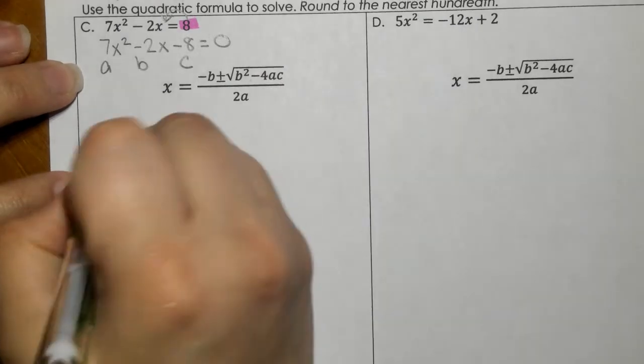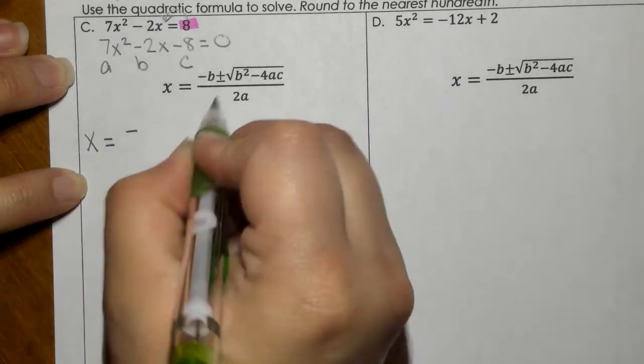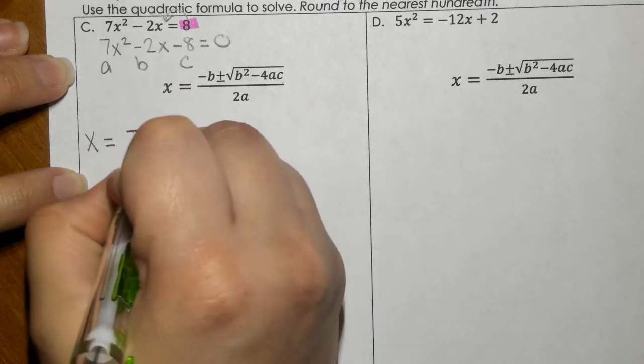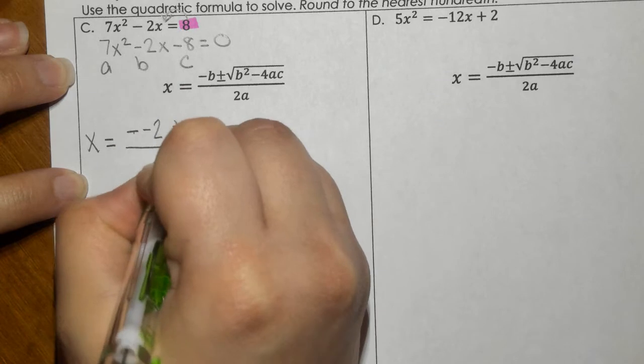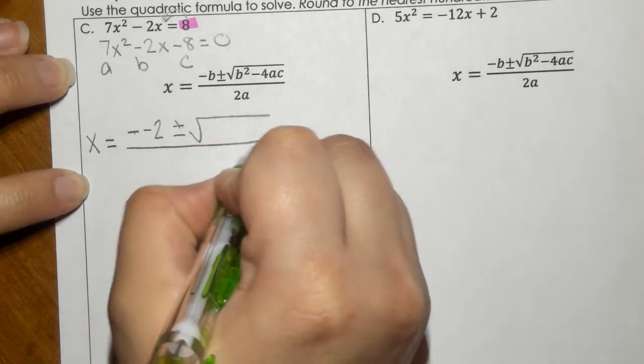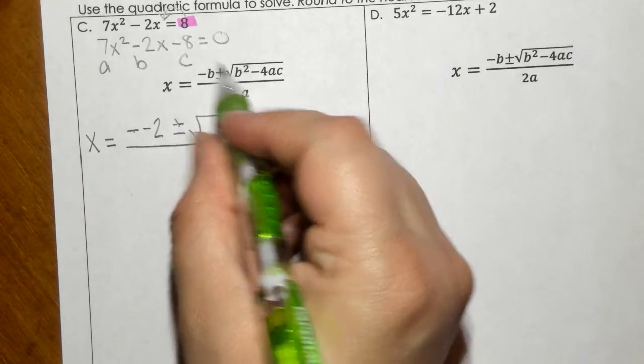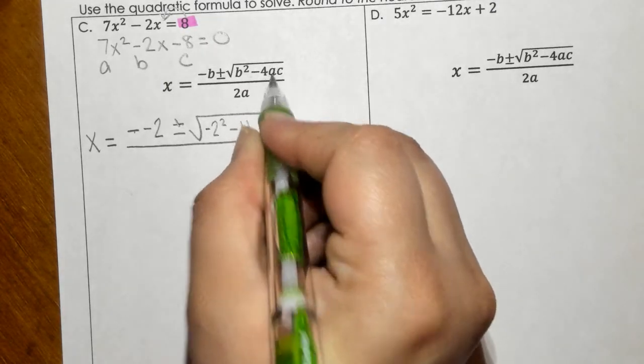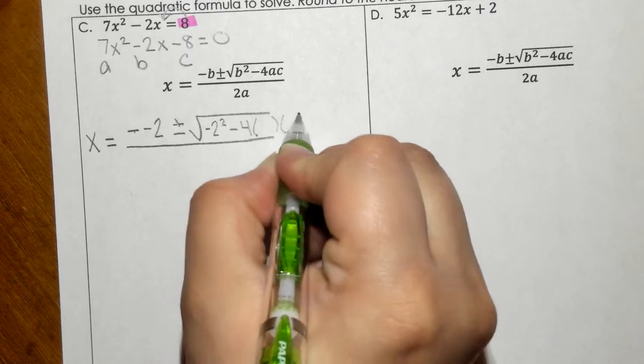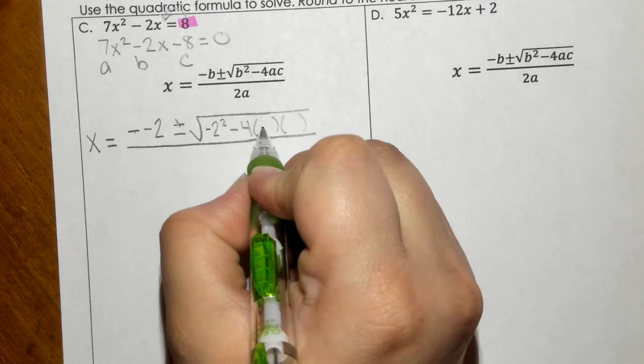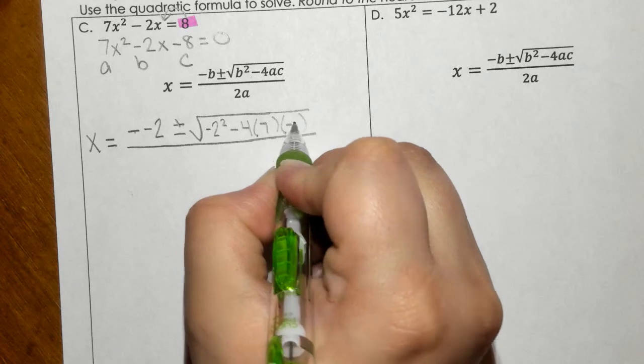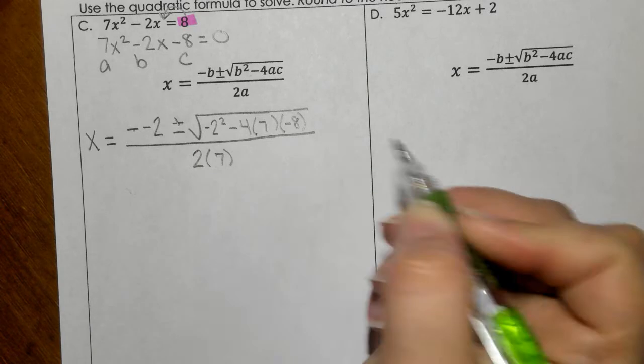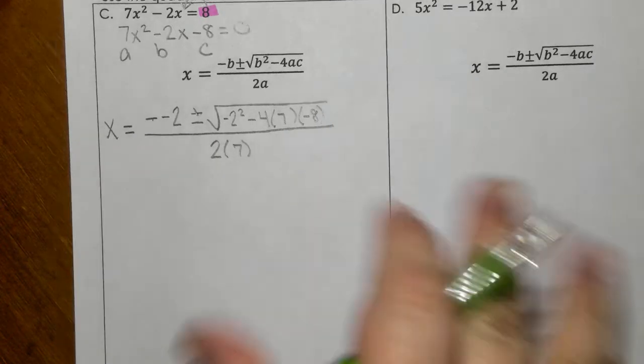Now we're going to plug it into the formula. So B is negative, and B here is also negative. Then we have B squared, so negative two squared, minus four. Remember we do parentheses for A and for C, so A is seven, and C is negative eight. Then we have two times A, where A is seven.